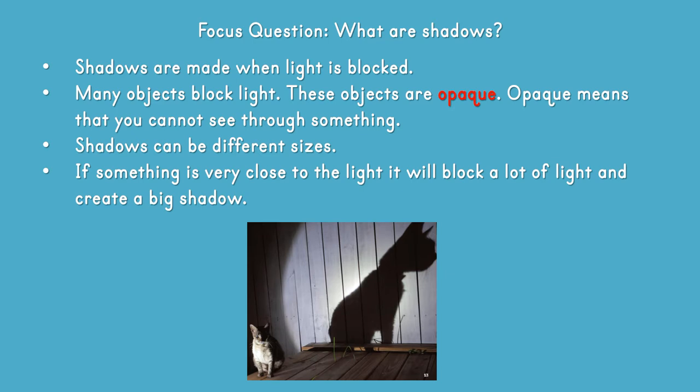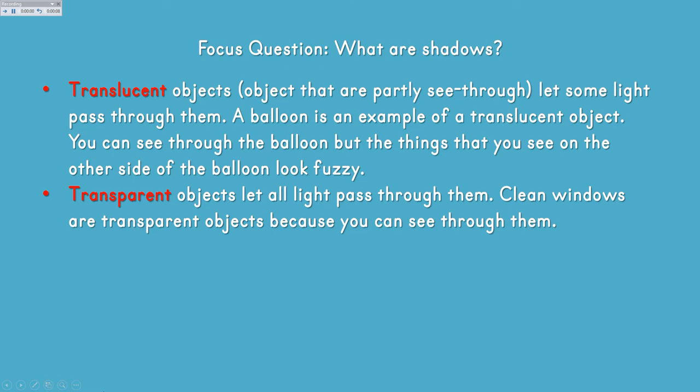Shadows can be different sizes. If something is very close to the light, like the kitten that you see in the picture below, it will block a lot of light and create a big shadow.